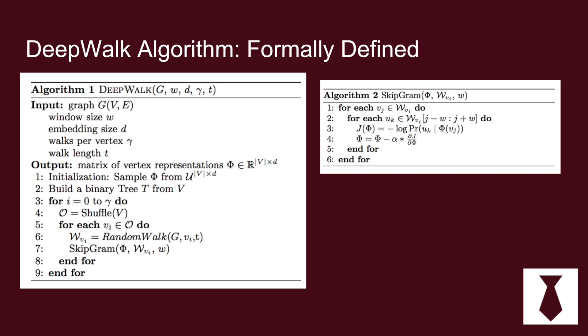So this is the formal definition of the deep walk algorithm. On the left it shows you they slide the context window. They do something called hierarchical softmax to reduce the computational complexity but that's out of the scope of this video. What they do is they slide the window and then they use the skip gram model to encode the vertices into a low-dimensional space.